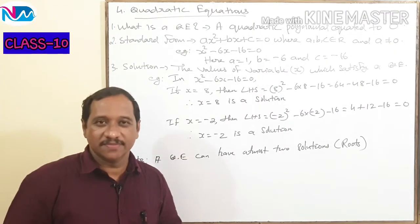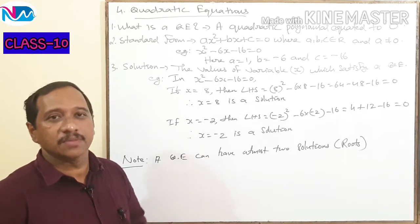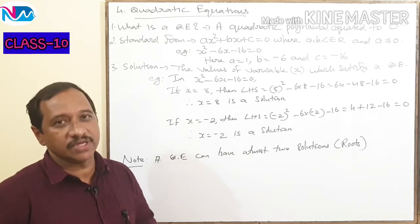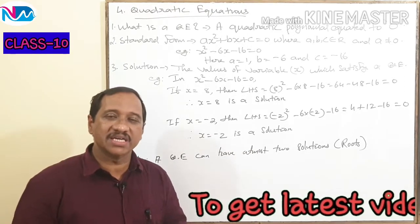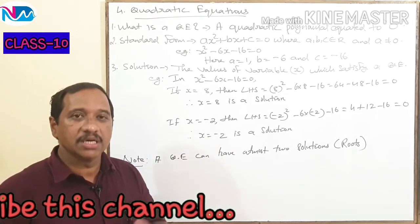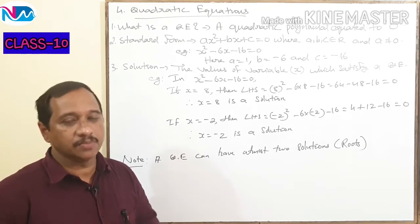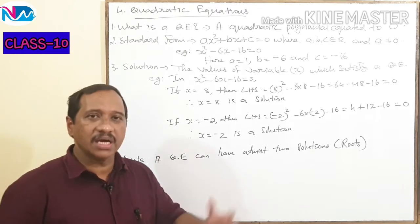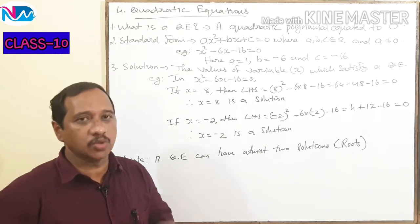What is a quadratic equation? A quadratic equation is formed when a quadratic polynomial is equated to zero. You have learned about different types of polynomials in chapter two, such as linear polynomial, quadratic polynomial, cubic polynomial, bi-quadratic polynomial, etc. So if a quadratic polynomial is equated to zero, it becomes a quadratic equation.